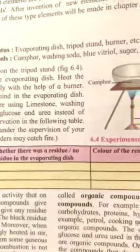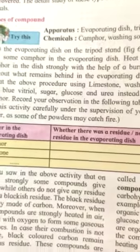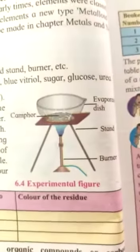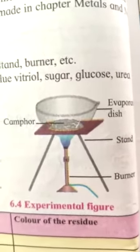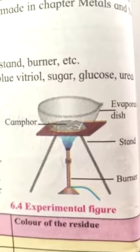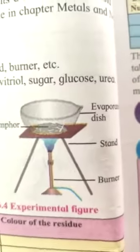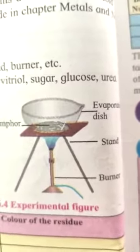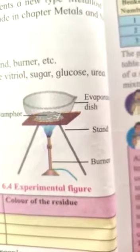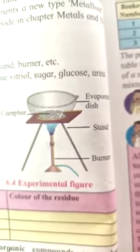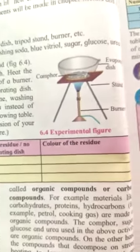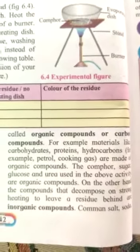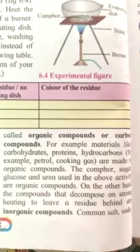Now we will see types of compounds. Take an evaporating dish, heat it, and keep some camphor in that dish. After heating, it will evaporate completely and only white ash will remain behind. You can also use limestone, soda, blue vitriol, sugar, glucose, and urea instead of camphor. When carbon burns, black residue — black ashes — remain. Compounds which leave a carbon residue are called organic compounds or carbon compounds. For example, carbohydrates, proteins, hydrocarbons, petrol, cooking gas, etc.